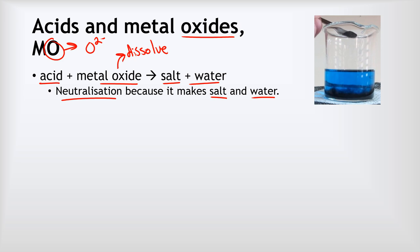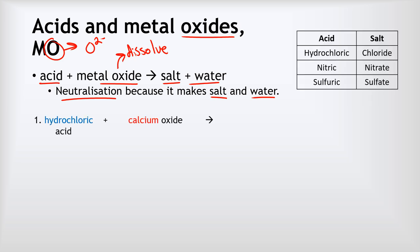Let's look at some worked examples. If we have hydrochloric acid reacting with calcium oxide: the cation comes from calcium in calcium oxide, so the first part of our salt name is calcium. Hydrochloric acid produces a chloride salt, so this is calcium chloride. Don't forget we also make water because this is a neutralization reaction.